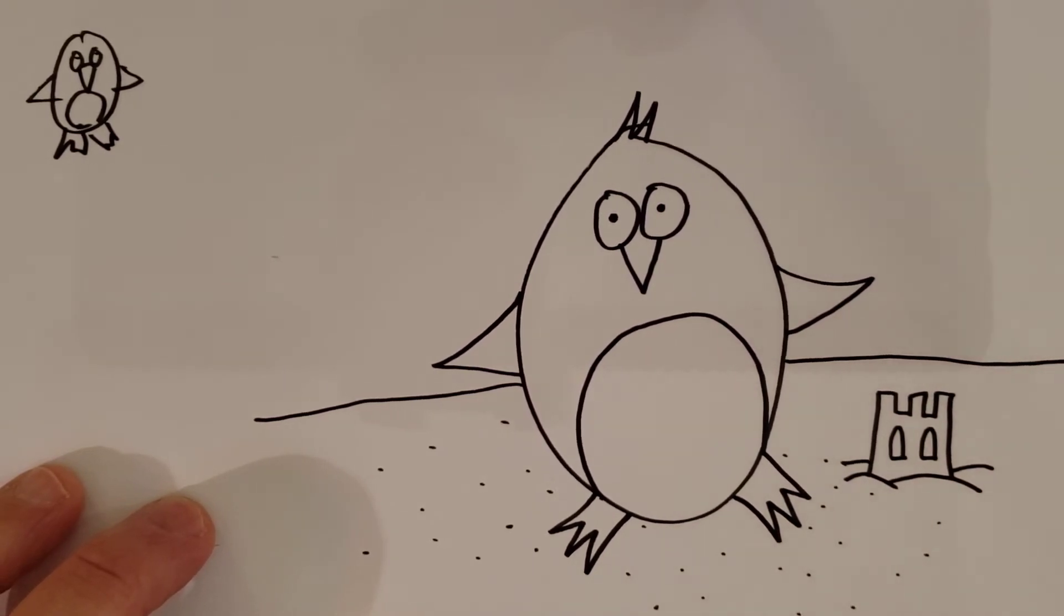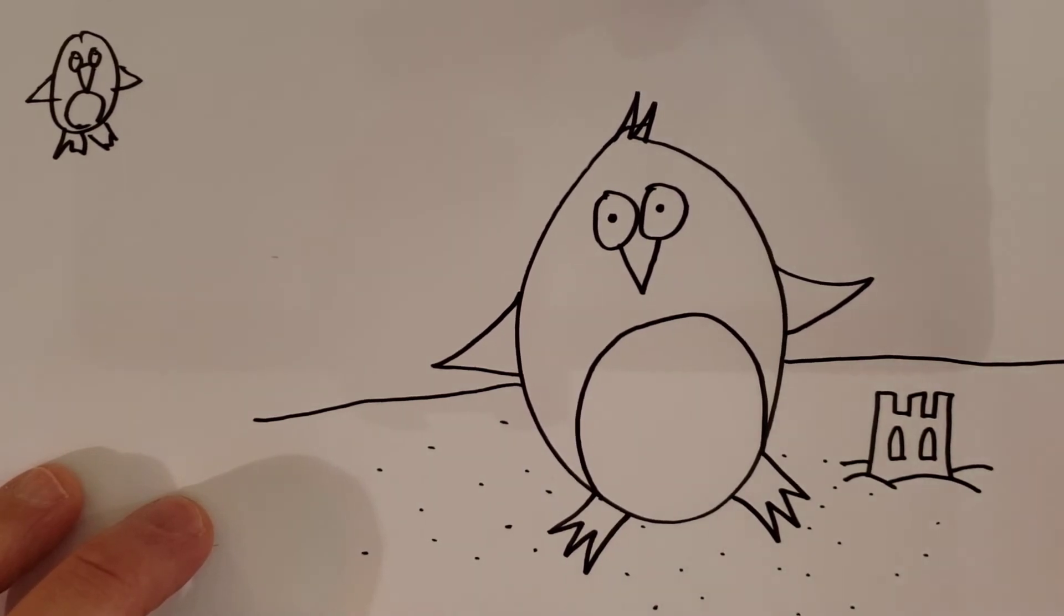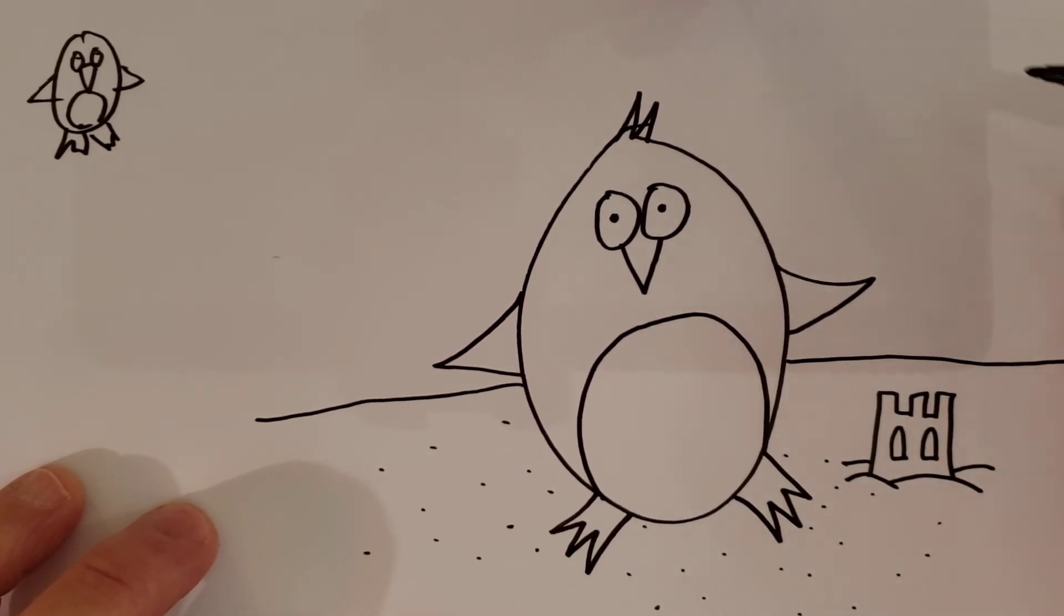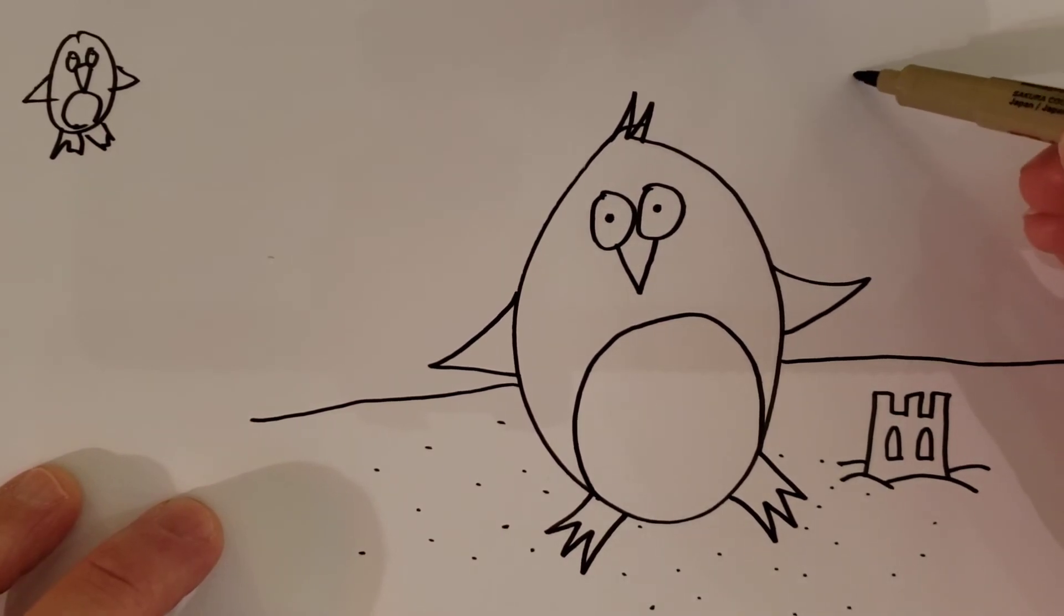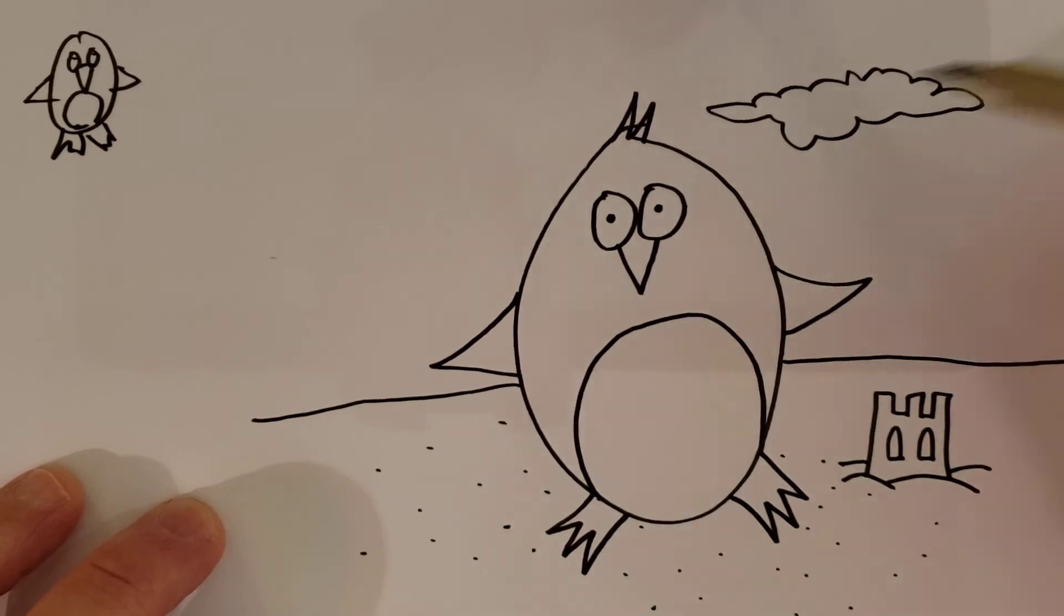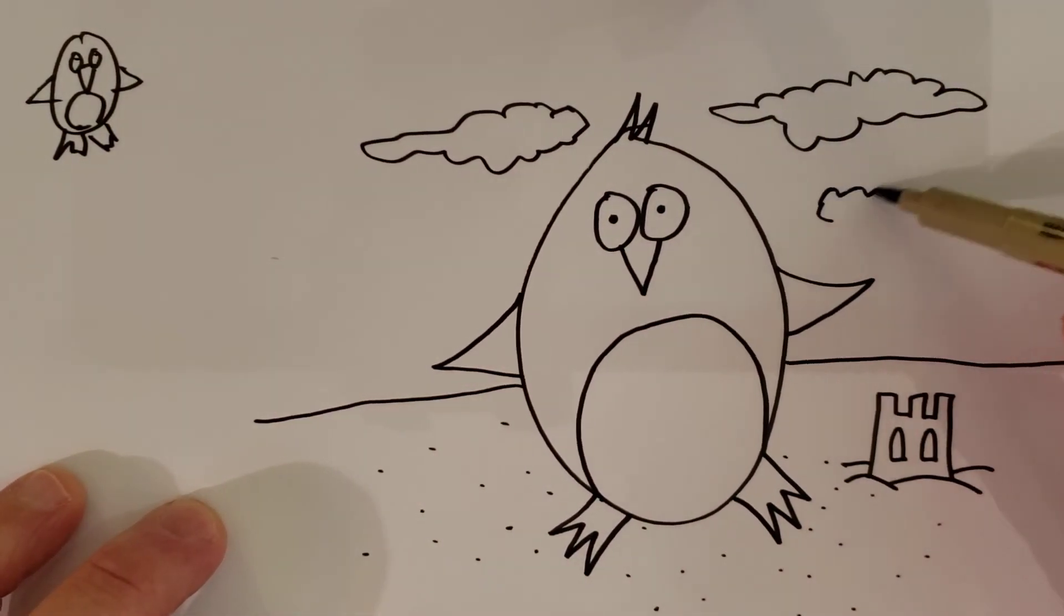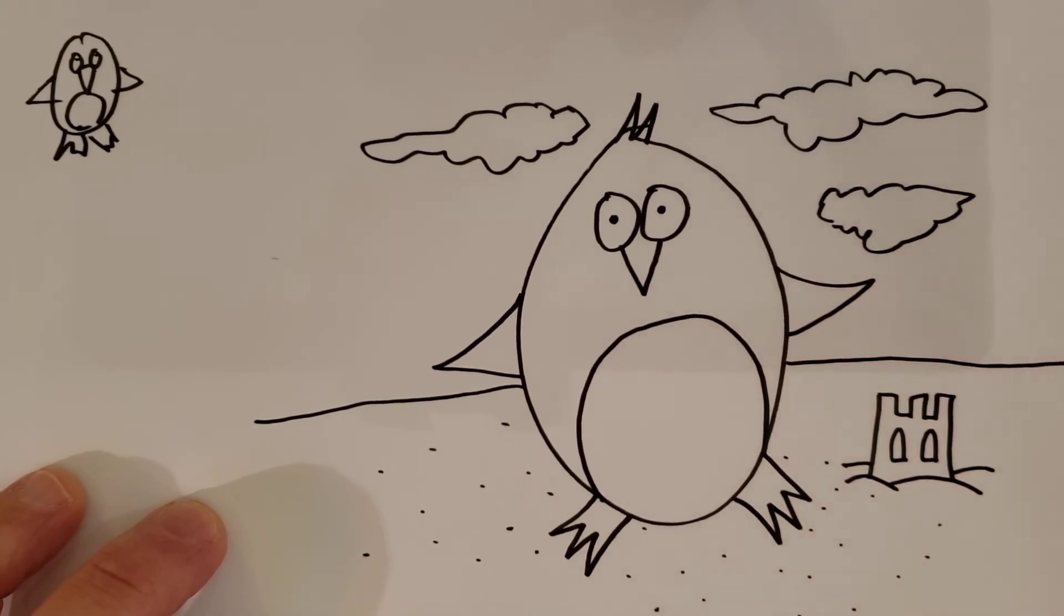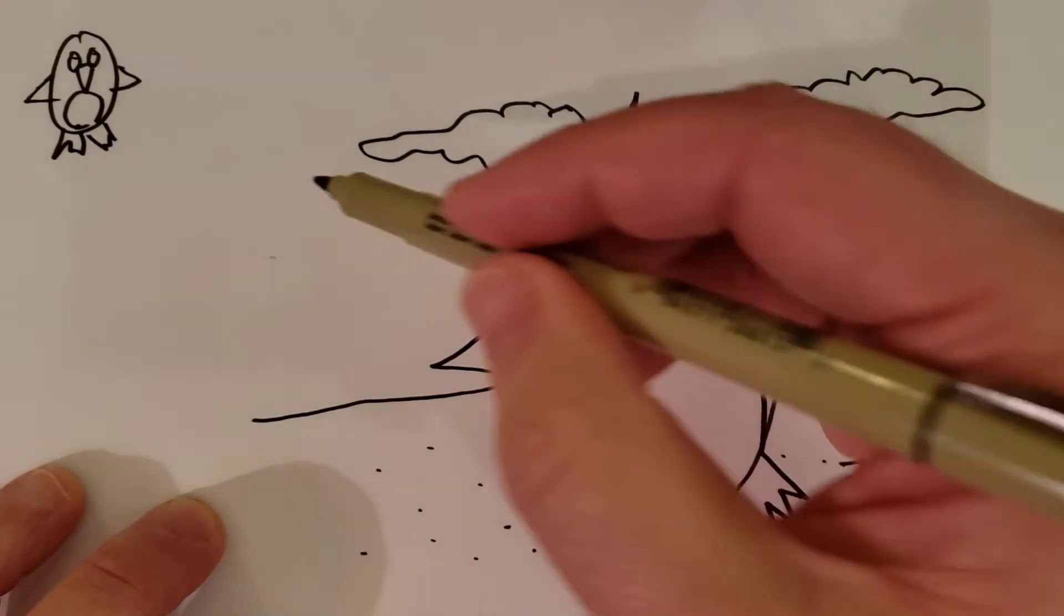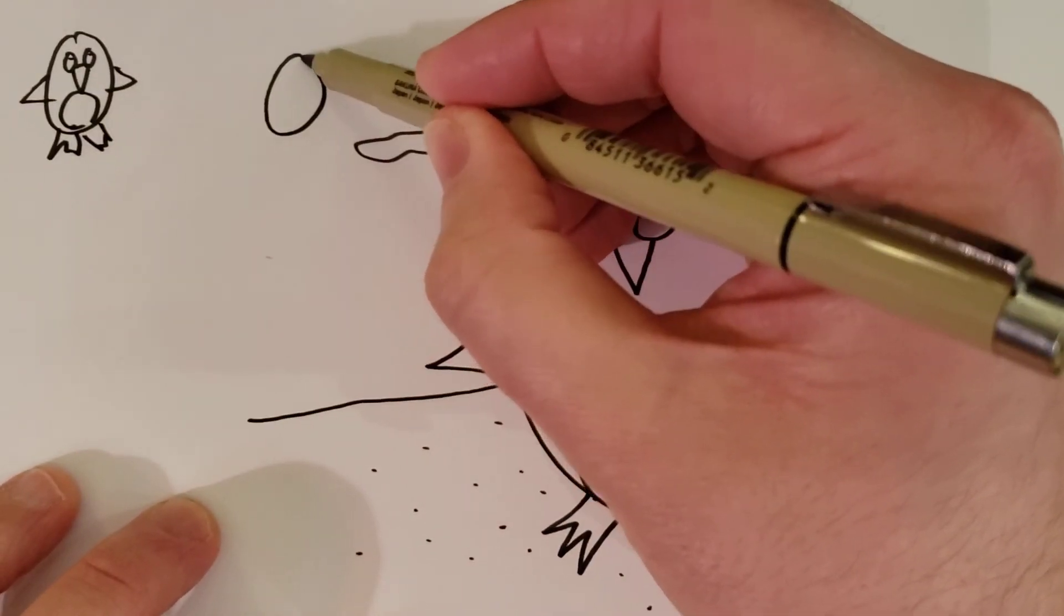Alright, now we're gonna go up top and put some clouds into the sky, just a couple little clouds. And we'll add a third little cloud, why not, have fun. Okay, and then we're gonna put the sun, so we're gonna go up here and draw a circle.